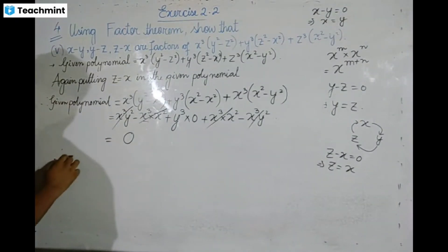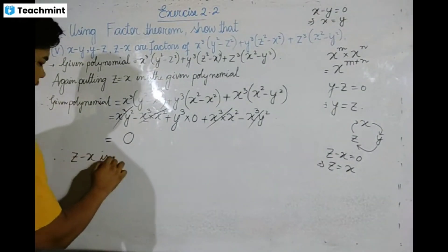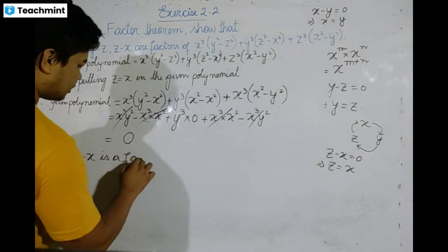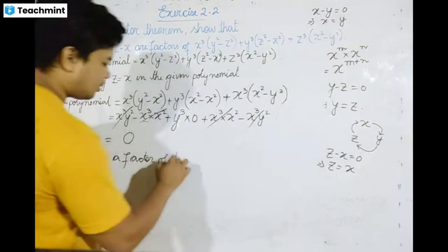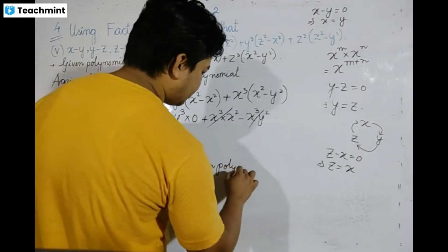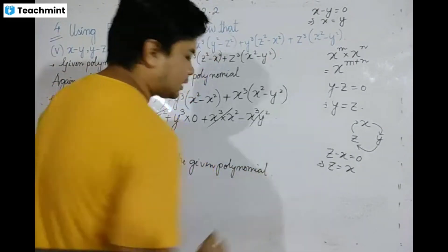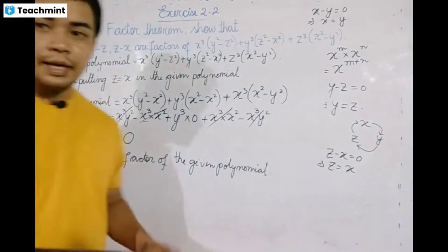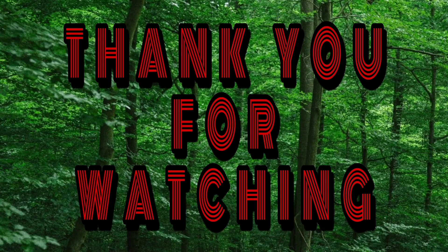Therefore, z minus x is a factor of the given polynomial. All three — (x minus y), (y minus z), and (z minus x) — are factors of the given polynomial. Thank you.